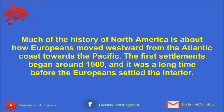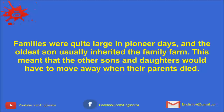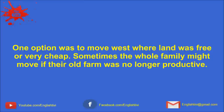Much of the history of North America is about how Europeans moved westward from the Atlantic coast towards the Pacific. The first settlements began around 1600, and it was a long time before the Europeans settled the interior. By the late 18th century, however, good farmland along the east coast was becoming scarce. As the population increased, people began thinking about all the native Indian lands further inland. Families were quite large in pioneer days, and the oldest son usually inherited the family farm. This meant that other sons and daughters would have to move away when their parents died.